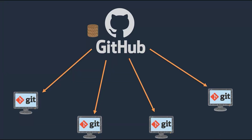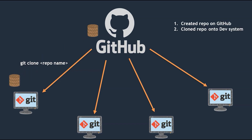Hello folks, welcome back. So far what we have done is we have created a repository on our GitHub account and then we have used a git clone command to get that code onto the developer system. So these are the steps we have followed: first we created a repository on GitHub and cloned the repository onto the dev system.